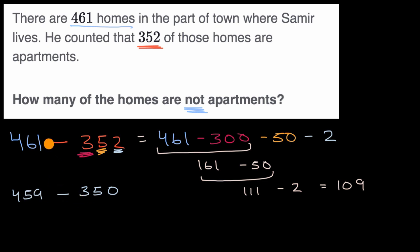And this is all about the idea that the difference doesn't change as long as you add or subtract the same number to both. And so here, we might say that 400 minus 300 is 100, and then 59 minus 50 is 9. So we would get the same result. The thing to appreciate is that this is all about subtracting 352 from 461, and that there's multiple ways of calculating this.